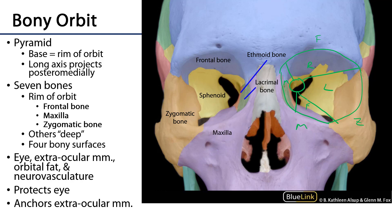The roof of the orbit is going to be in contact with the anterior cranial fossa. The lateral wall is in contact with the middle cranial fossa. The floor is adjacent to the maxillary sinus, and the medial wall is adjacent to the nasal cavity and some of the paranasal sinuses — in particular the ethmoidal air cells and the sphenoidal sinus.